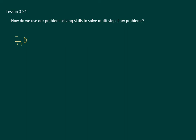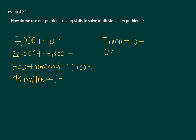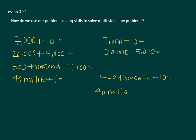First one is 7,000 plus 10. Then we have 20,000 plus 5,000. Then we have 500,000 plus 1,000. And then we have 40,000,000 plus 1. And then we have 7,000 minus 10. We have 20,000 minus 5,000. Then we have 500,000 plus 10. And then we have 40,000,000 minus 1.